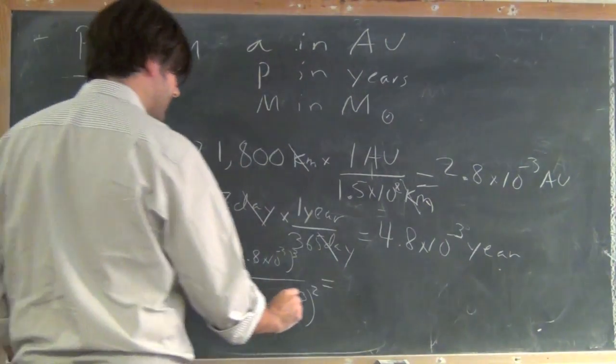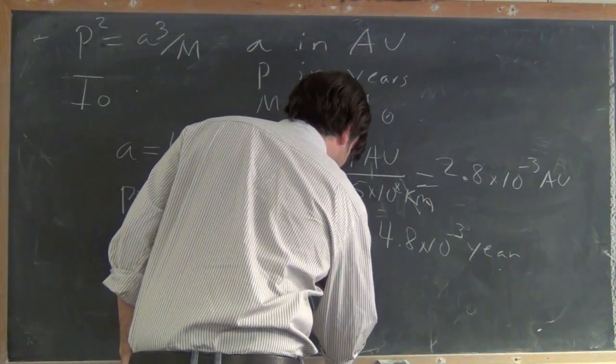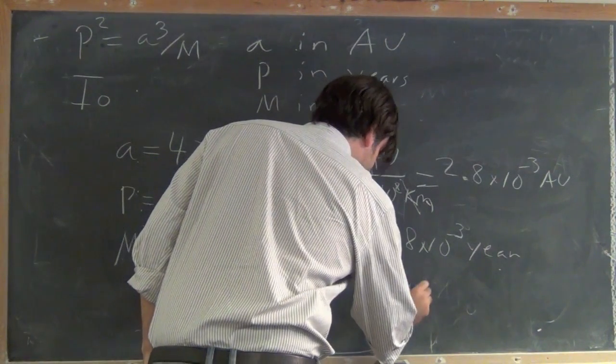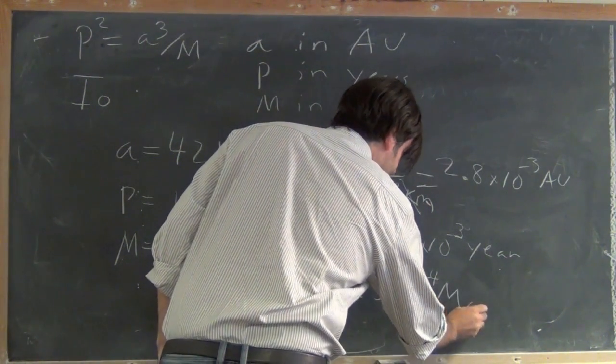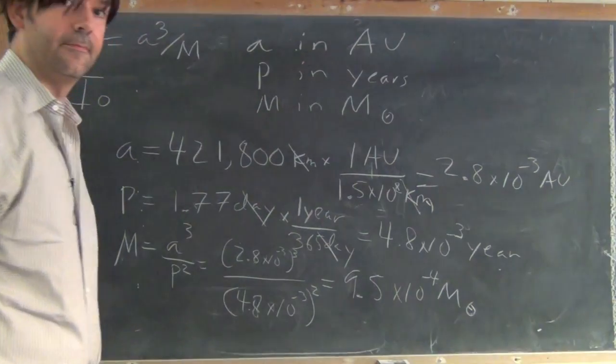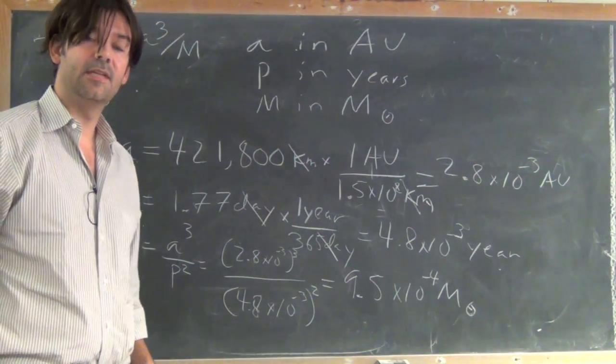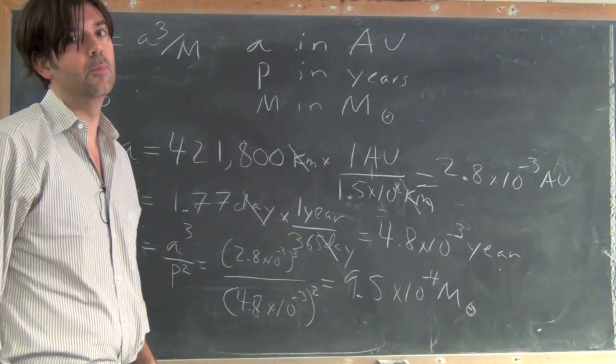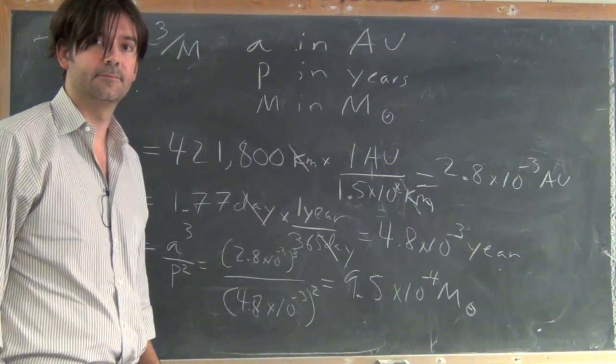And what do I get? 9.5 times 10 to the minus 4 solar masses. So about 10 to the minus 3 solar masses. It's about 1/1000th of the mass of the Sun.